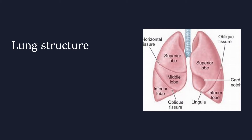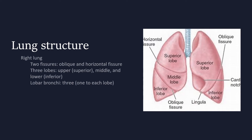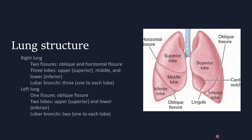The right lung has two fissures: the horizontal fissure and the oblique fissure, giving it three lobes — upper, middle, and lower — each with its own lobar bronchus, for a total of three lobar bronchi. The left lung has one fissure, the oblique fissure, with two lobes — upper and lower — and two lobar bronchi, one to each lobe.